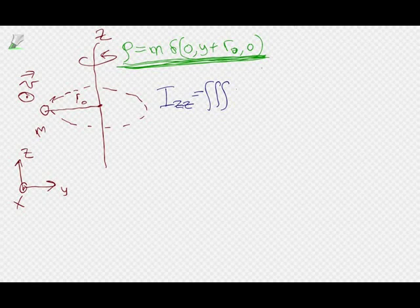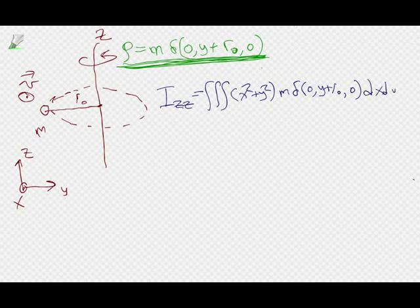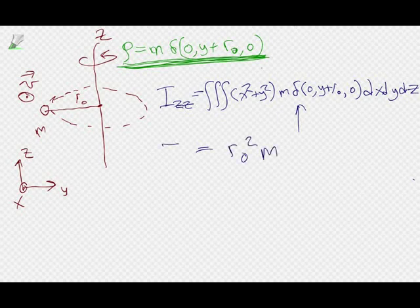This is going to be an instantaneous I_zz because at different times the density will change. So I_zz equals the integral over all space of (x squared plus y squared) times the density, which is m times delta(0, y + r_0, 0) times dx dy dz. Delta functions make integrals easy: this plucks out the value of the function at those positions. So that's 0 squared plus (−r_0) squared times m, giving m r_0 squared — which is I_zz.